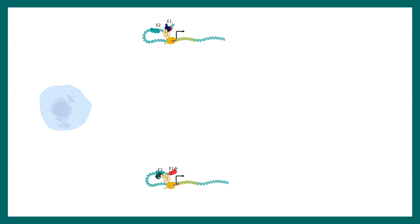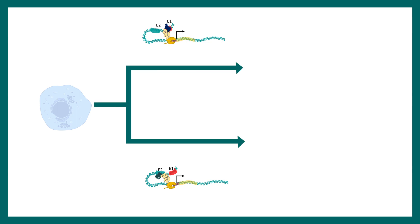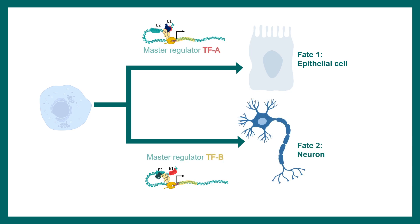Altogether, depending upon what type of enhancer, promoter, and transcription factor elements are chosen, a cell's fate can be determined — for example, fate 1 as epithelial or fate 2 as neuronal. This is governed by different sets of transcription factors, different enhancer elements, and how these enhancer elements interact with different genomic locations. In summary: there can be enhancer modularity acting in permutation and combination; enhancers act in coordination with specialized transcription factors; and they also interact with nucleosome remodeling factors to regulate eukaryotic gene expression.